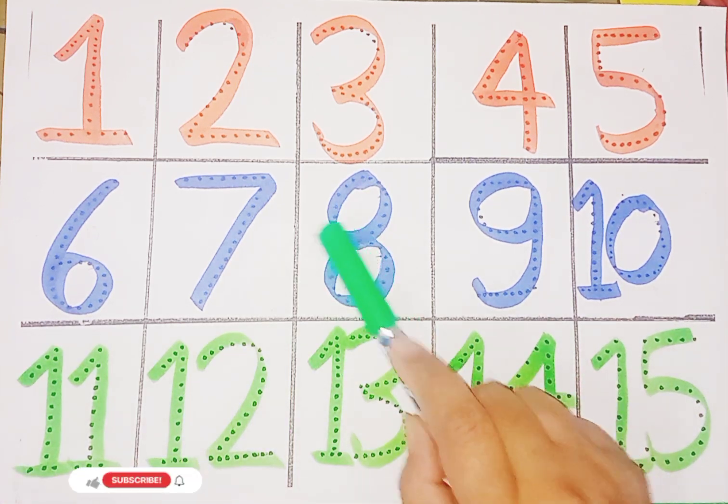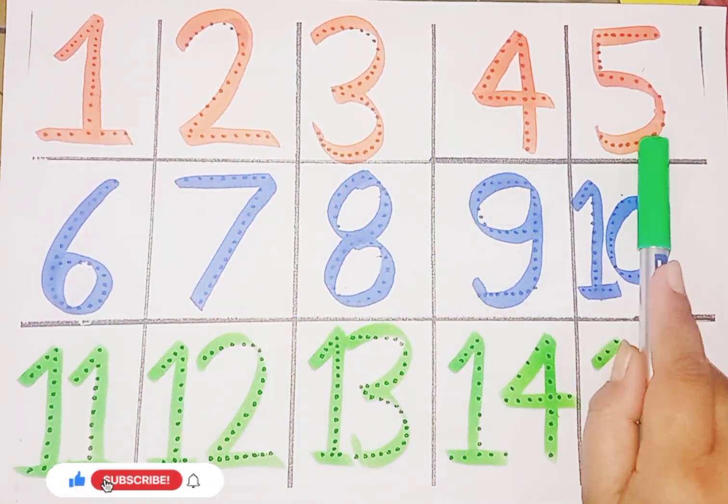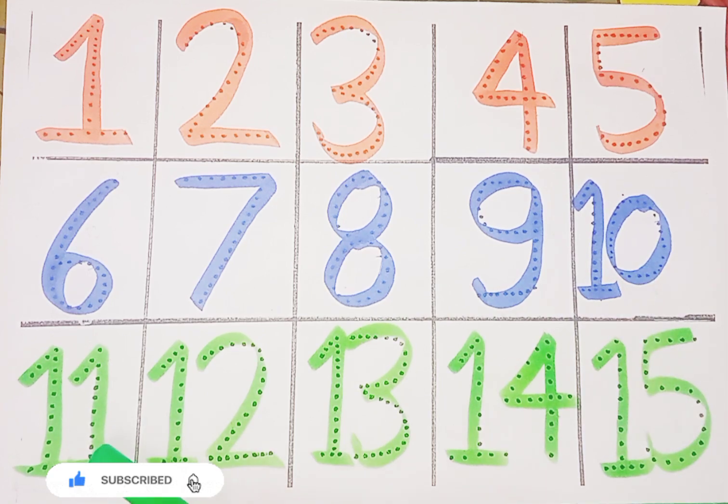So kids, today we learn counting 1, 2, 15. 1, 2, 3, 4, 5, 6, 7, 8, 9, 10, 11, 12, 13, 14, 15.